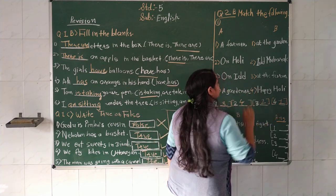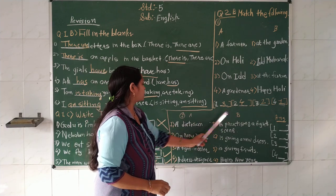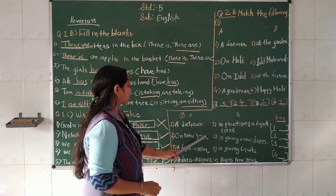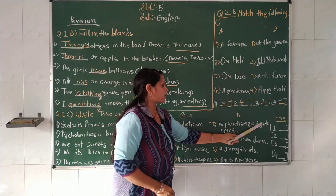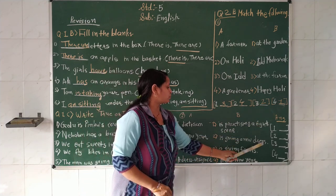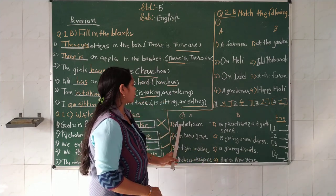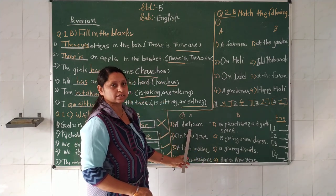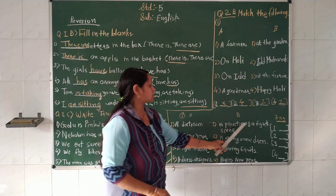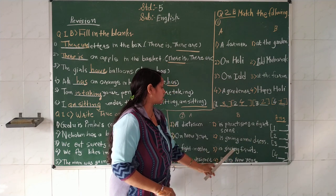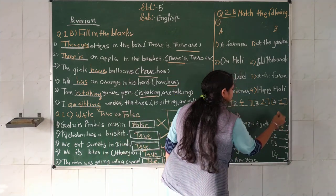Matching exercise: A = Dietitian, B = Fight Master, A = Dress Designer. Dietitian એટલે આહાર-શાસ્ત્ર (dietitian). A Dietitian - Is giving fruits. A Fight Master - Is practicing a fight scene. A Dress Designer - Is giving a new dress.